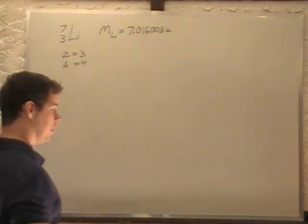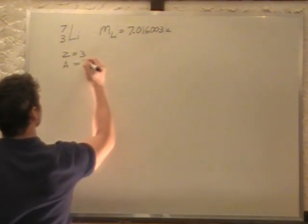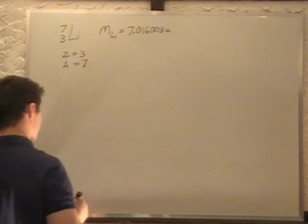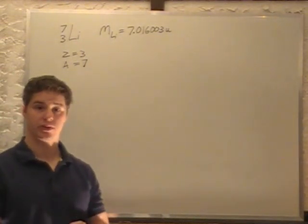A is 7, that is this number here, and that is the total number of particles in the nucleus. So, protons plus neutrons.